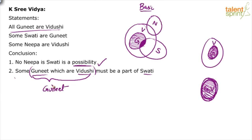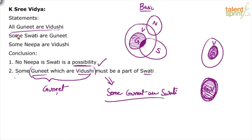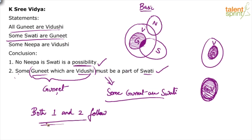Now reread the conclusion: 'some Gunit must be a part of Swati,' which means some Gunit are Swati. So conclusion two indirectly means some Gunit are Swati. Is it true? Yes — some Swati are Gunit is given, which means some Gunit are Swati. For 'some A are B,' the definite conclusion is 'some B are A.' So conclusion two also follows. Therefore, the answer is both conclusions one and two follow.